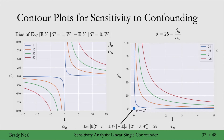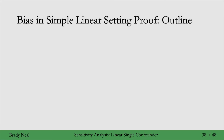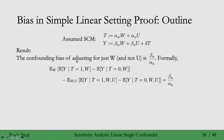That conveys most of the intuition and results in this linear single-confounder setting. Now we'll prove the result that the bias is just beta_U divided by alpha_U. The confounding bias of adjusting for just W and not U is beta_U divided by alpha_U. More formally, the ATE where we adjust for only W minus the ATE where we adjust for both W and U — the confounding bias — equals beta_U over alpha_U.